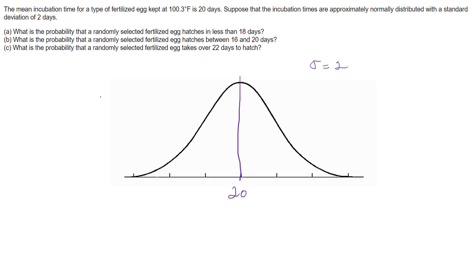The first question asks: what is the probability that a randomly selected egg hatches in less than 18 days? We need to standardize this value so we can look it up in the z-table.